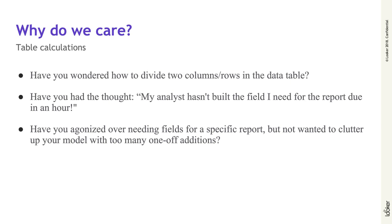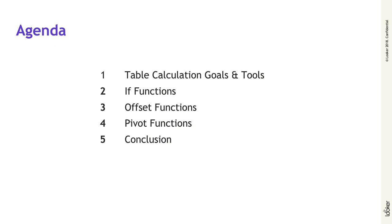Developers can use table calculations to effectively help keep the model clean by only defining fields that they want to reuse multiple times. Let's take a look at our agenda today. We're going to start with an introduction to the building blocks of table calculations, starting with some simple sum functions. Then we'll move into if functions, which we'll use to create conditional logic in table calcs. And then finally, we'll do offset and pivot functions and wrap it all up at the end.